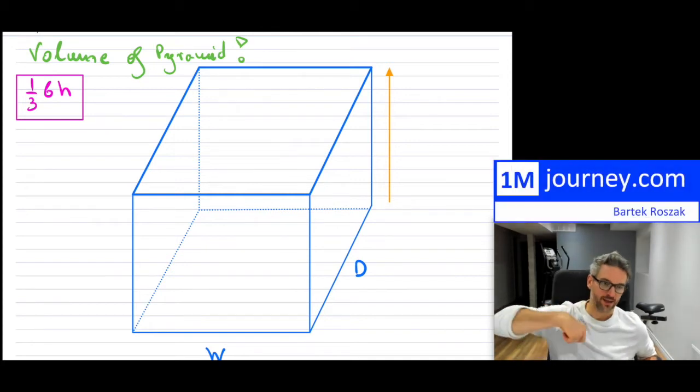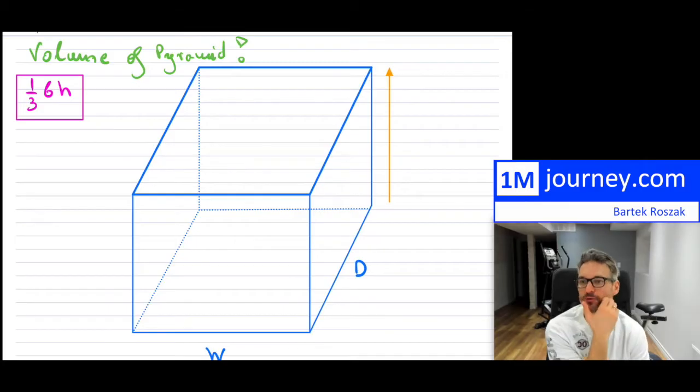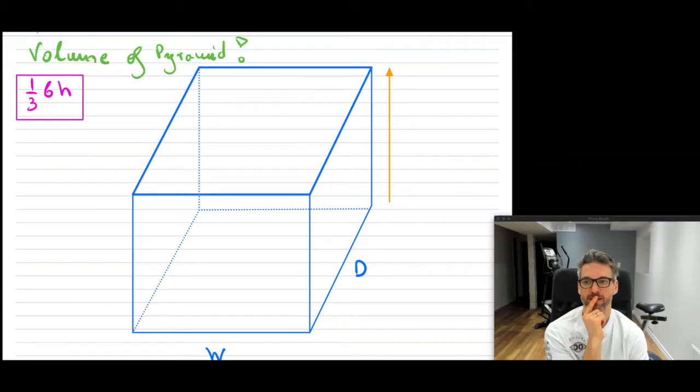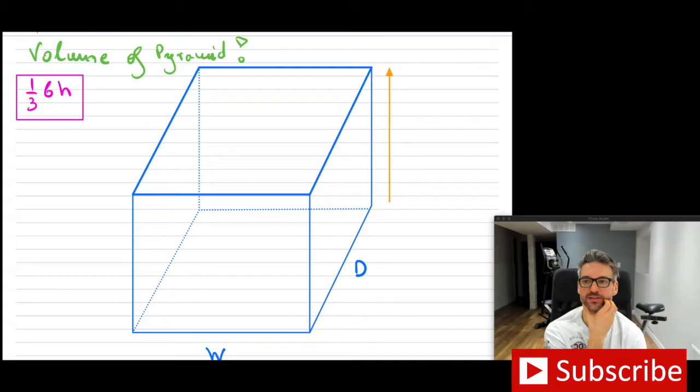2, 1, and off we go. Okay, so volume of a pyramid. Some of you may remember that the volume of a pyramid is one-third base times height. So I wanted to show you where this one-third in front comes from.